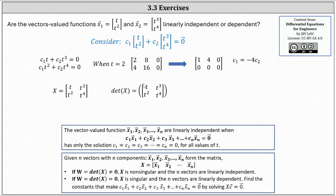The determinant is equal to t times t to the fourth minus t cubed times t squared, which gives us t to the fifth minus t to the fifth, which is equal to zero. Because the determinant of matrix X is equal to zero, we know the vector-valued functions are linearly dependent.